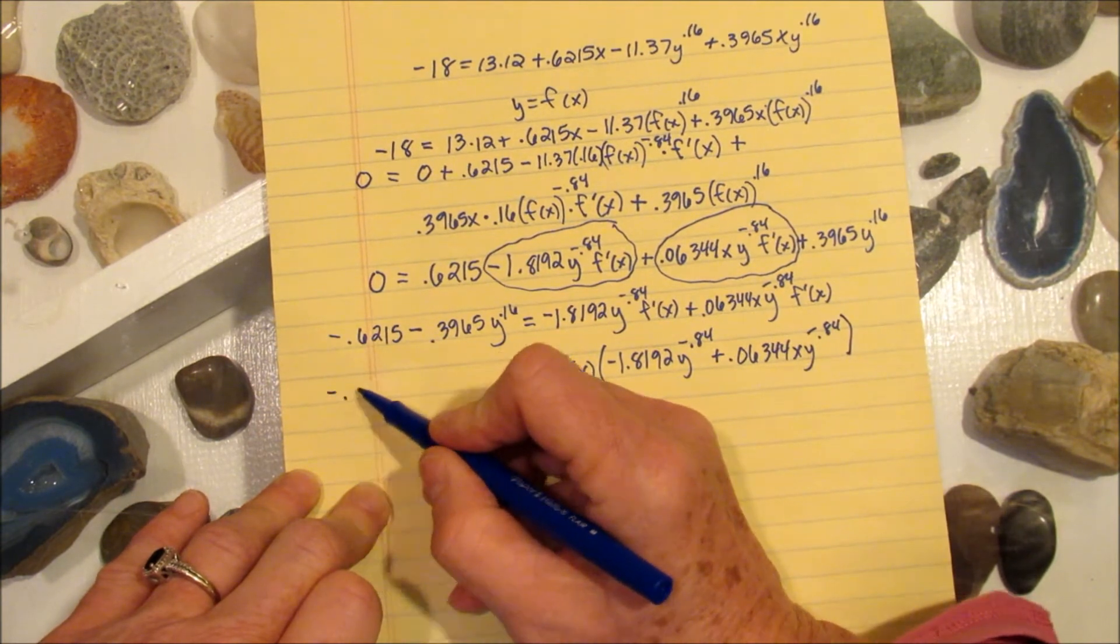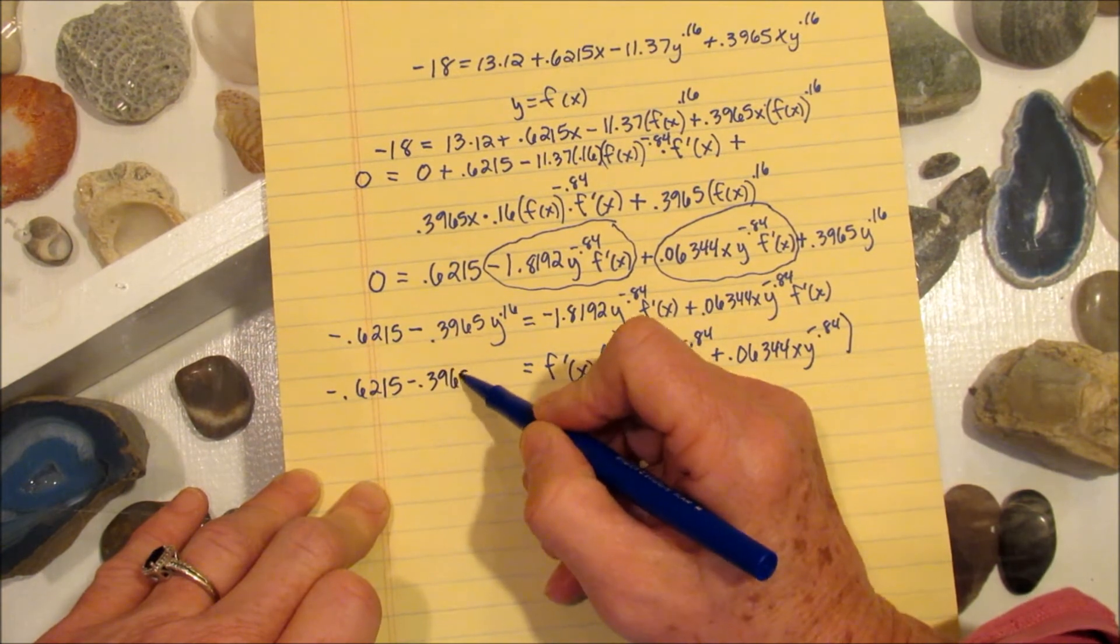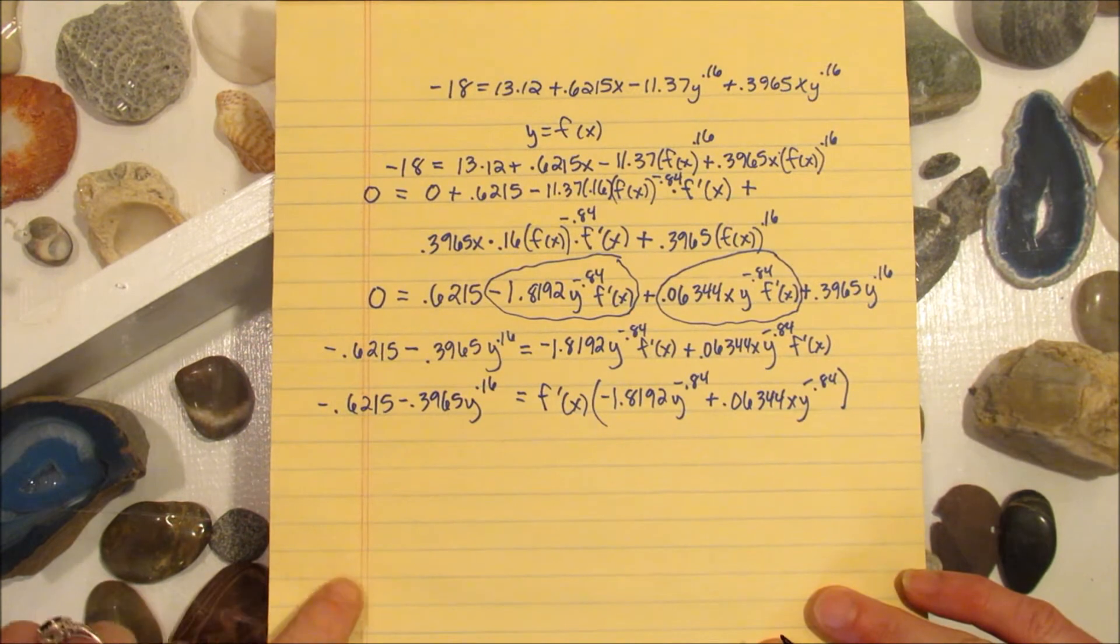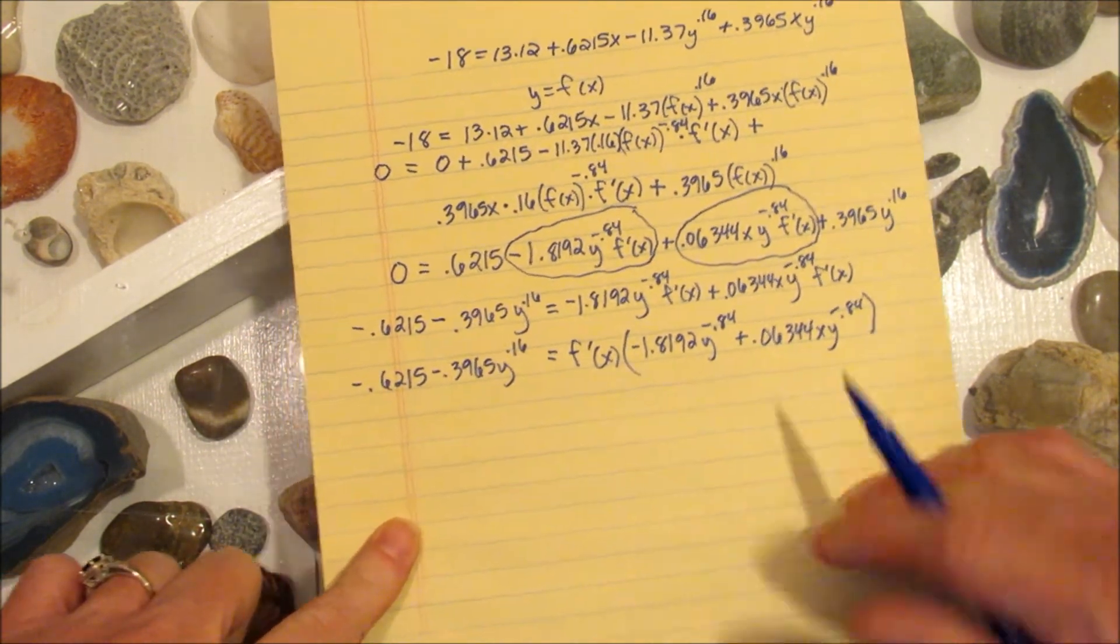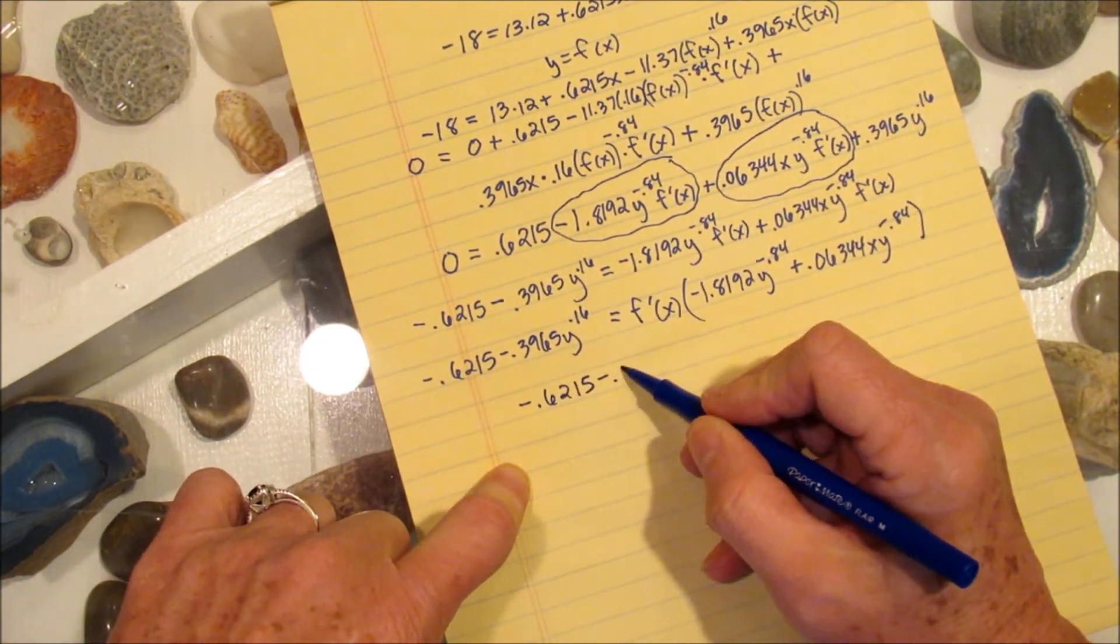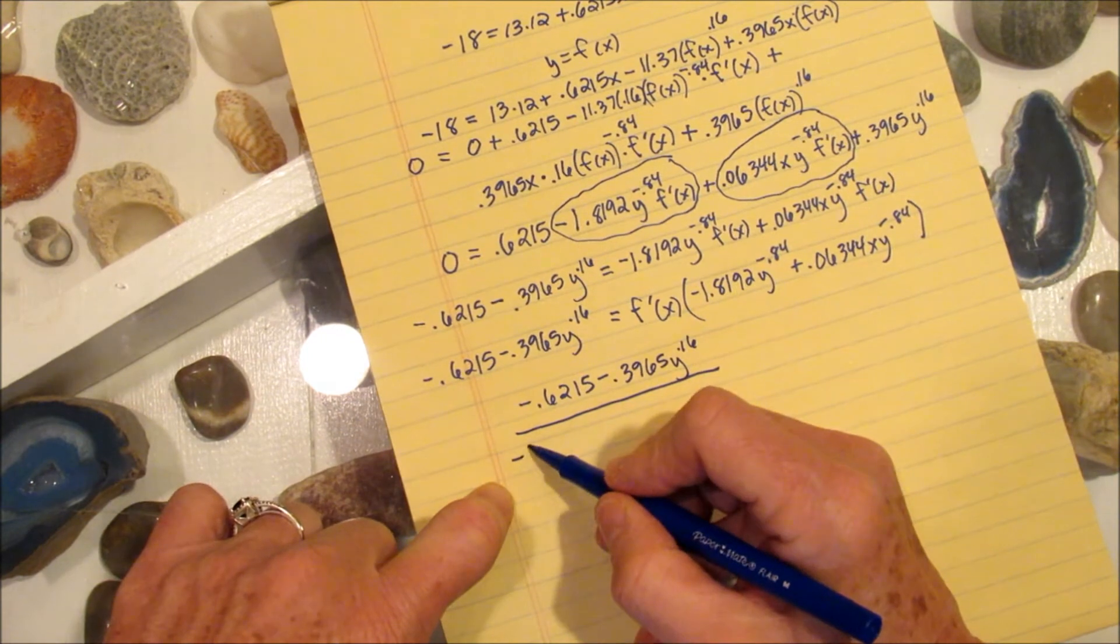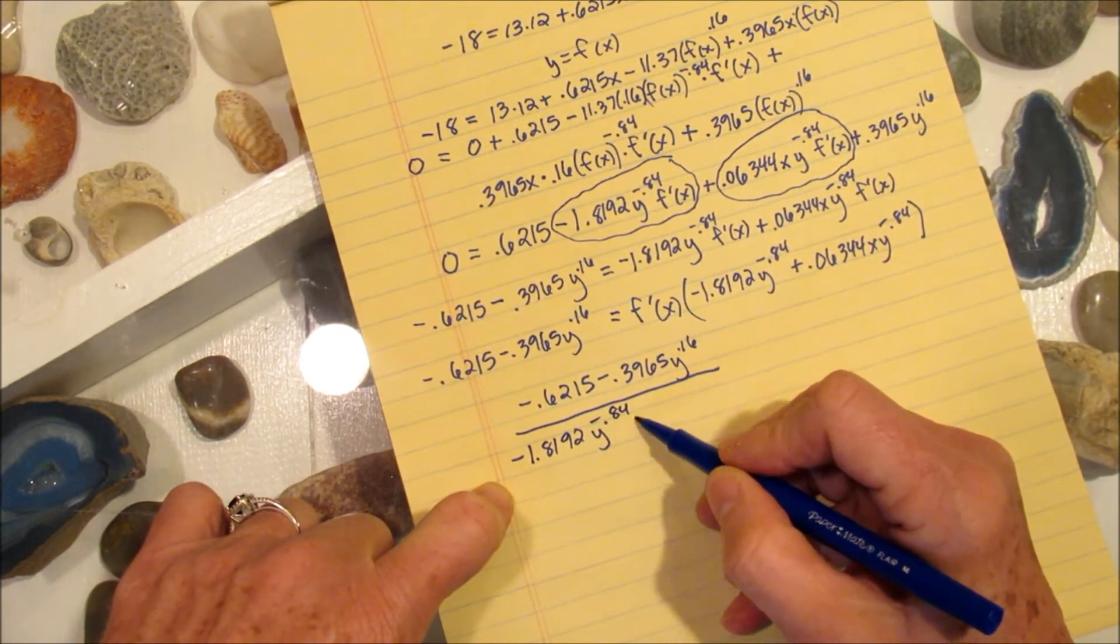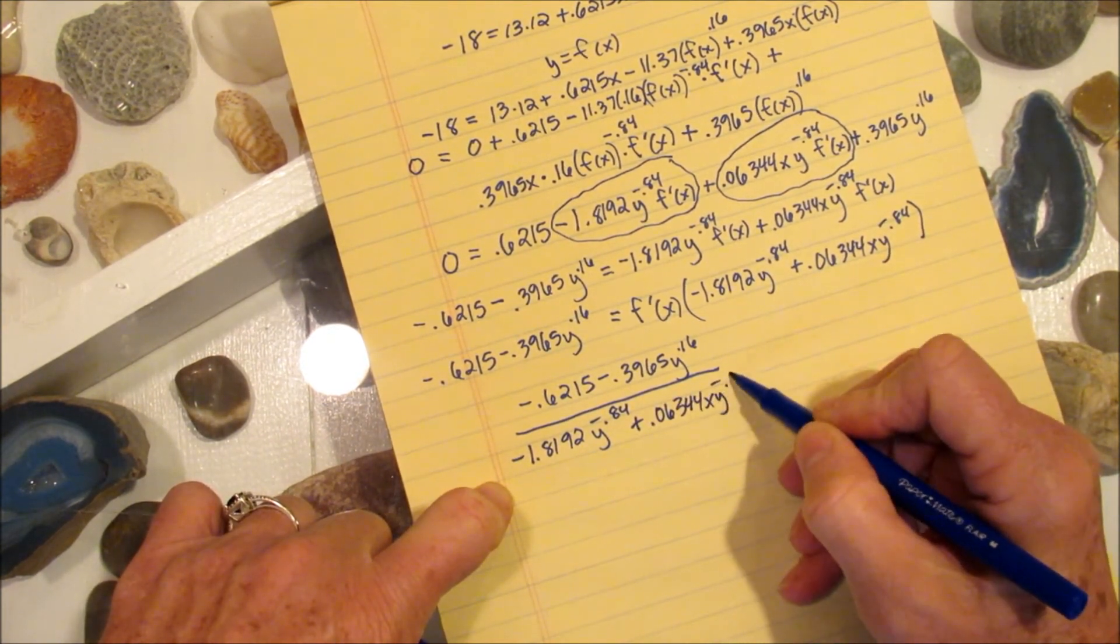And on this side, we still have the same thing. So now last step, I'm going to divide both sides by what's multiplying the f prime. So I get negative 0.6215 minus 0.3965y to the 0.16, that's all divided by negative 1.8192y to the negative 0.84 plus 0.06344xy to the negative 0.84.